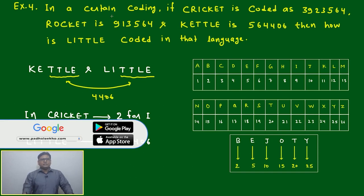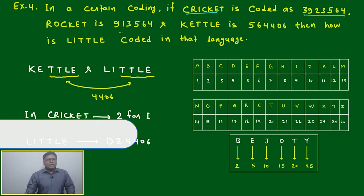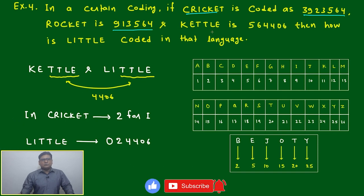Let's try to read the question. In a certain coding, if CRICKET is coded as 3923564, ROCKET is 913564, KETTLE is 564406, then how is LITTLE coded in that language? First thing we have to observe: based on one word alone we won't be able to crack the logic - what logic they're following and what mathematical reasoning they're using to convert from CRICKET to code 3923564 or ROCKET to 913564.